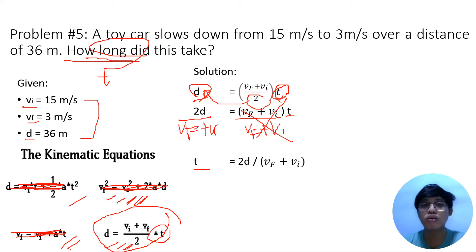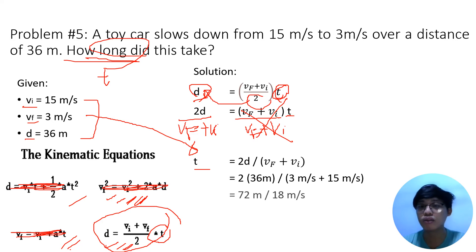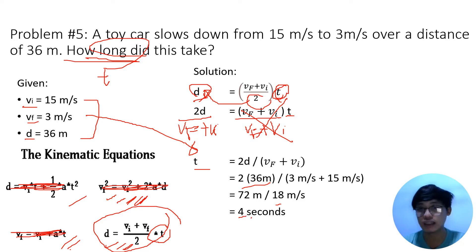Now we substitute all values: t = (2 × 36) / (3 + 15). The numerator: 2 times 36 equals 72 meters. The denominator: 3 plus 15 equals 18 meters per second. Then 72 divided by 18 gives 4 seconds. The meters cancel out, leaving seconds as the unit — which is correct for time.